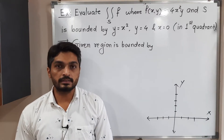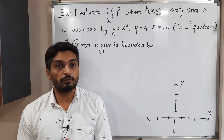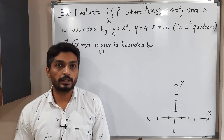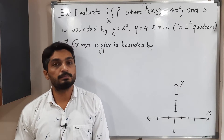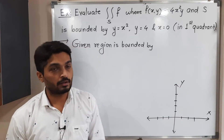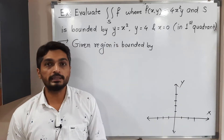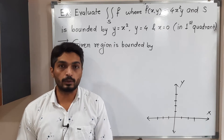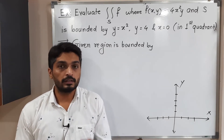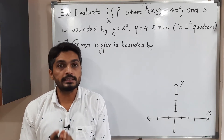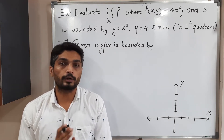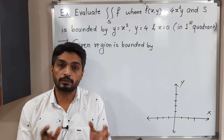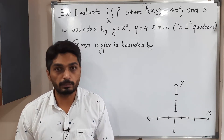Let us discuss this example of double integration. We have a double integration where the region is bounded by y equals x squared, y equals 4, and x equals 0. It is mentioned in a bracket that the region lies in the first quadrant only. Let us first find the region, and after that we will solve the double integration.